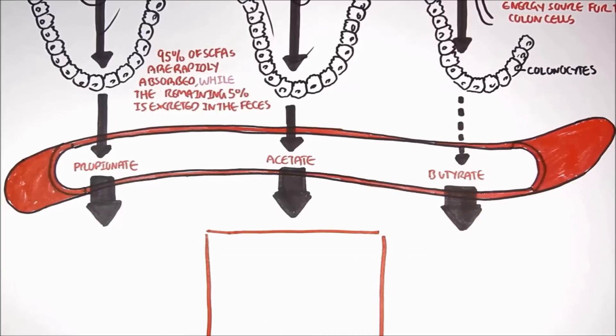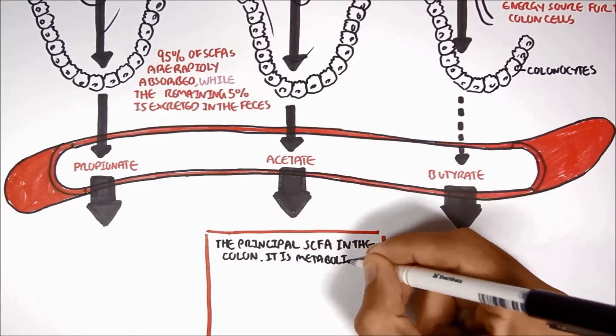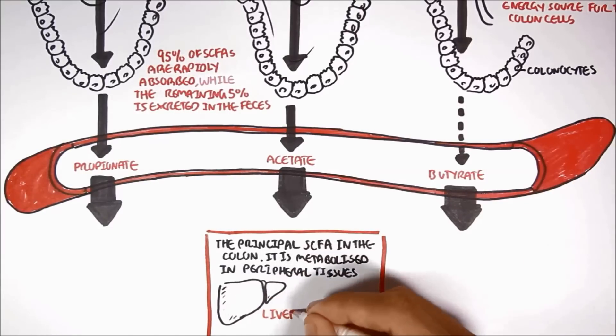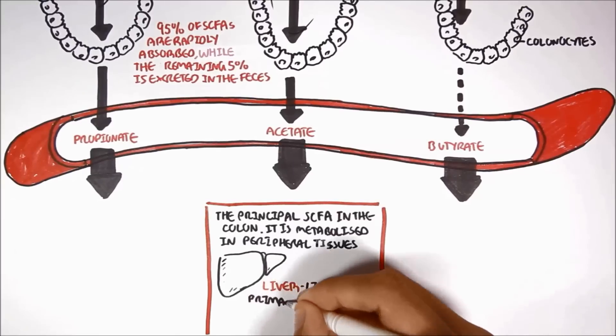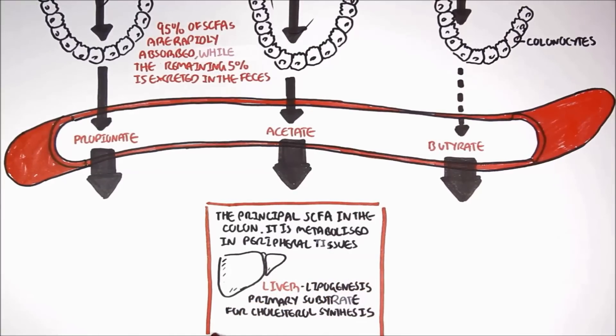So, acetate is the principal short-chain fatty acid in the colon. It is metabolized in peripheral tissues. In the liver, acetate has shown to stimulate lipogenesis, the synthesis of fats. Acetate is also the primary substrate for cholesterol synthesis.